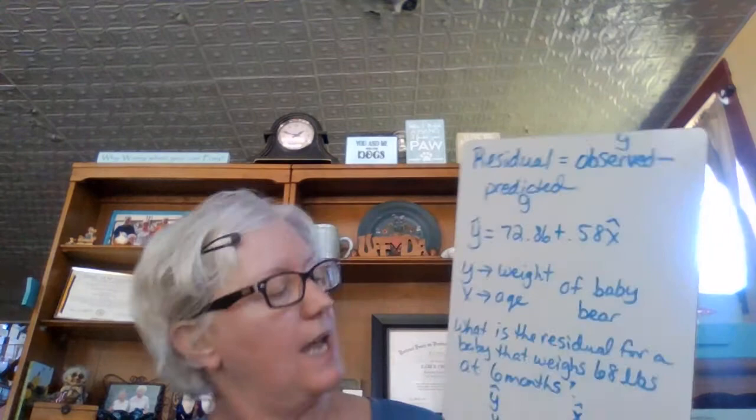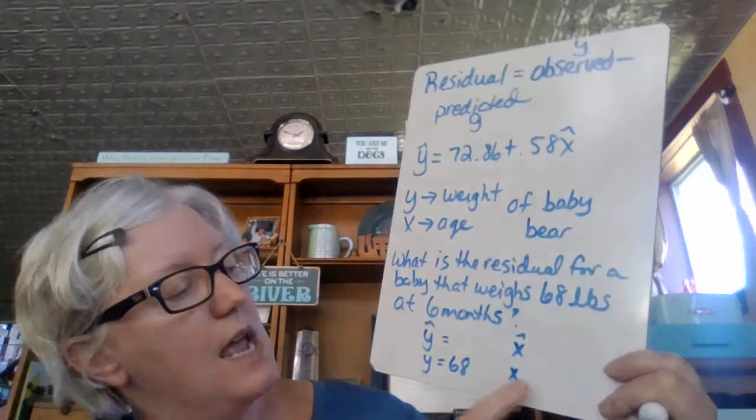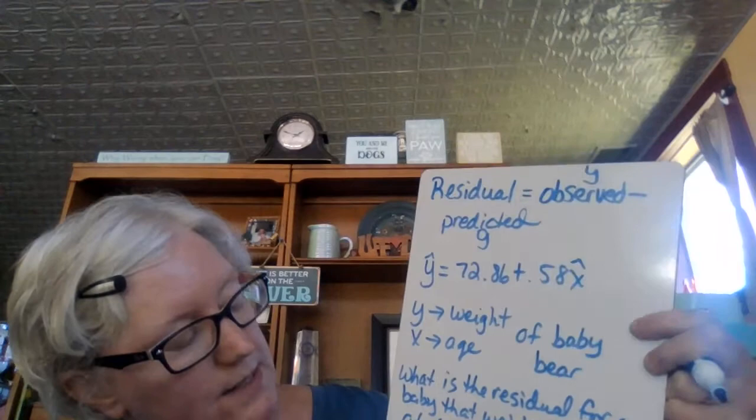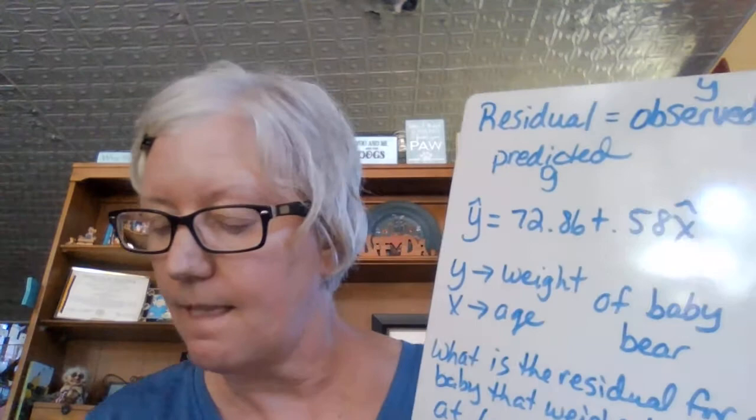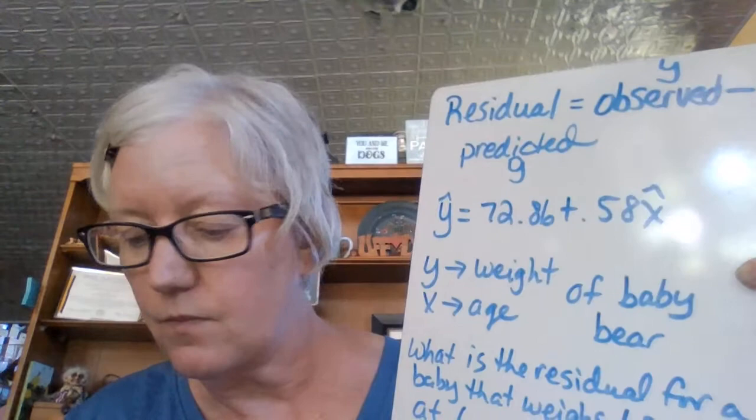To find the residual, you take your y and your y-hat. My y is my observed value — my y-hat is my predicted. So my y is 68 pounds because that's actually what it is, and six months is my x. When I put that into the equation — 0.58 times 6 plus 72.86 — I end up with 76.34.